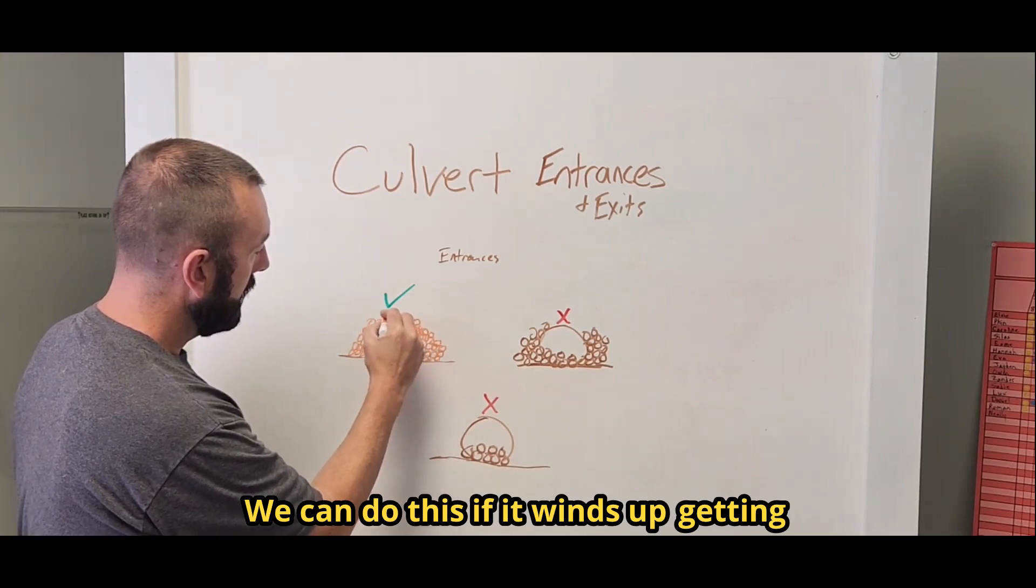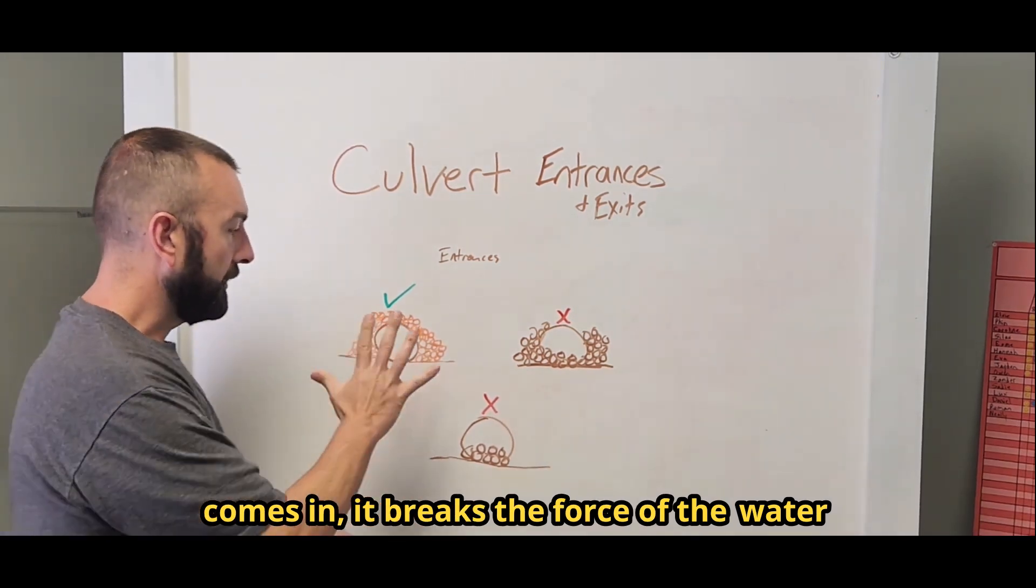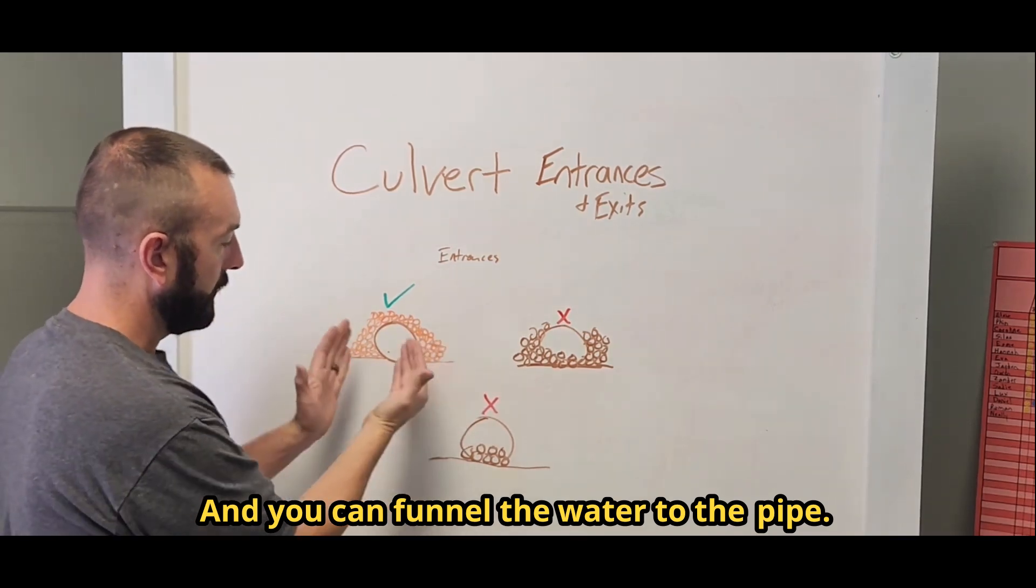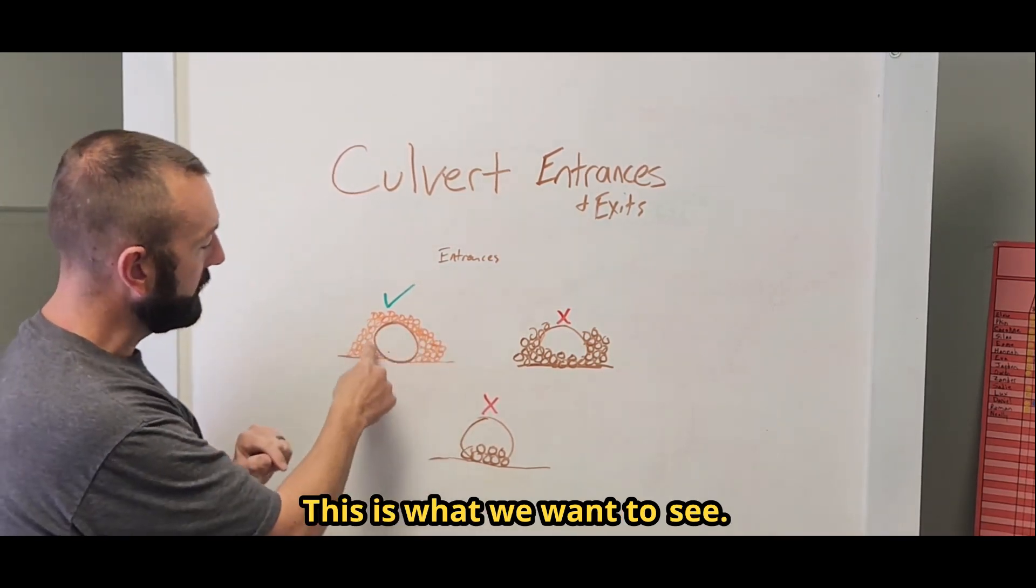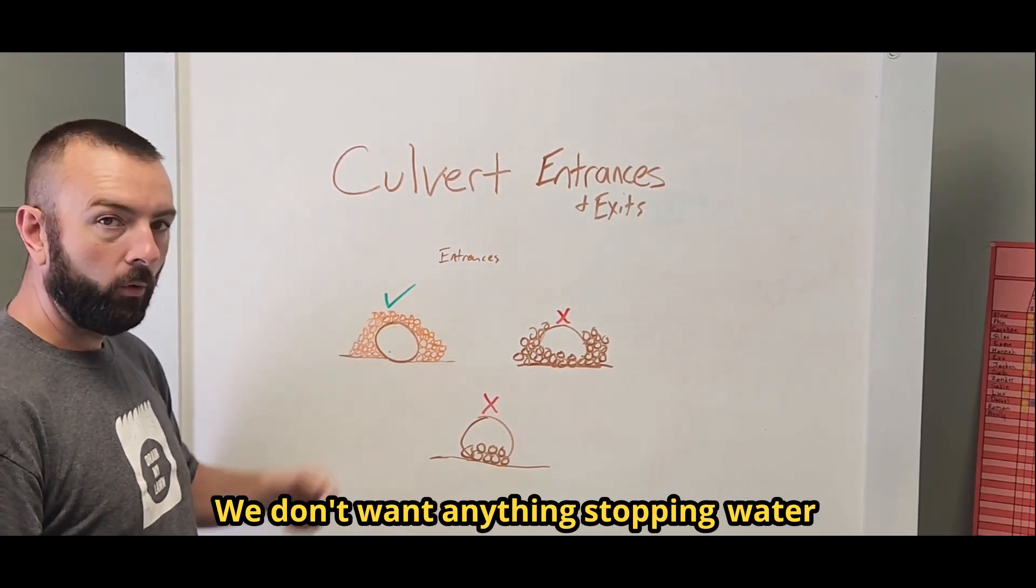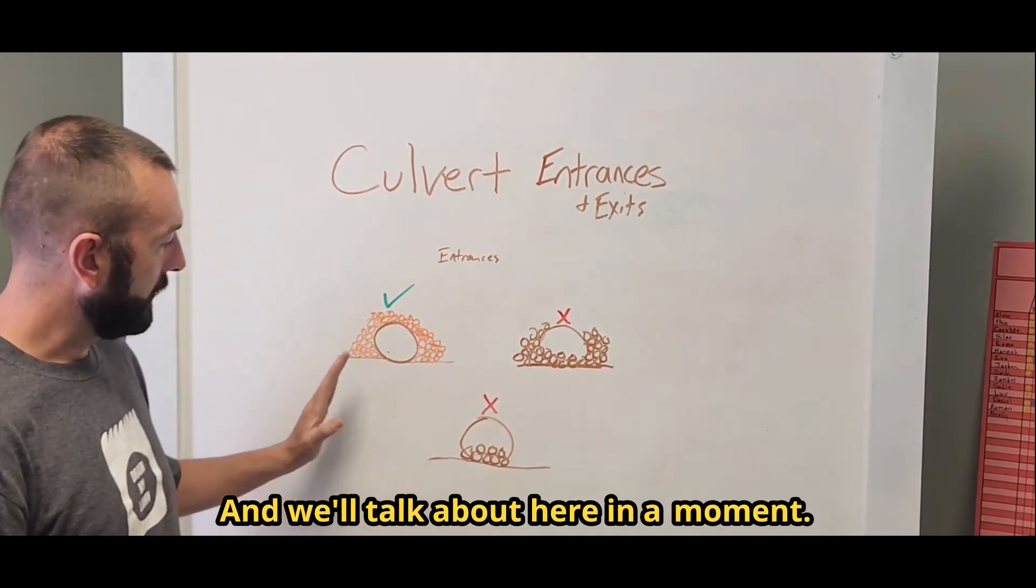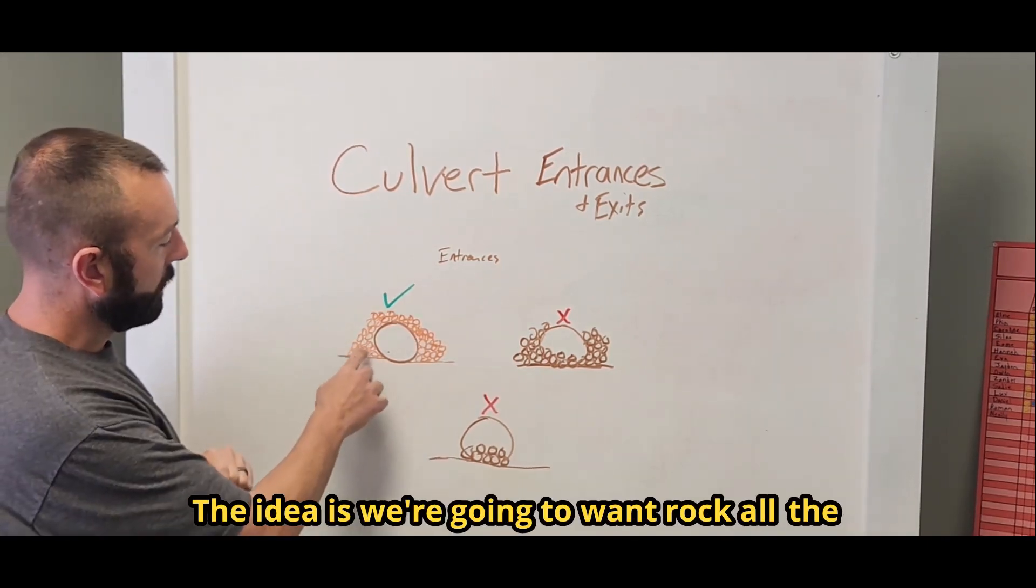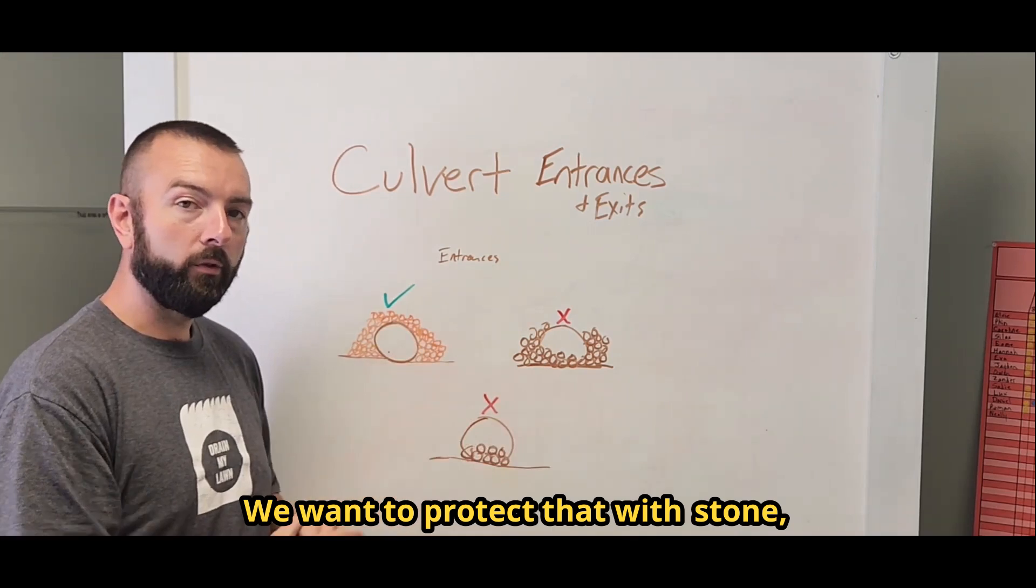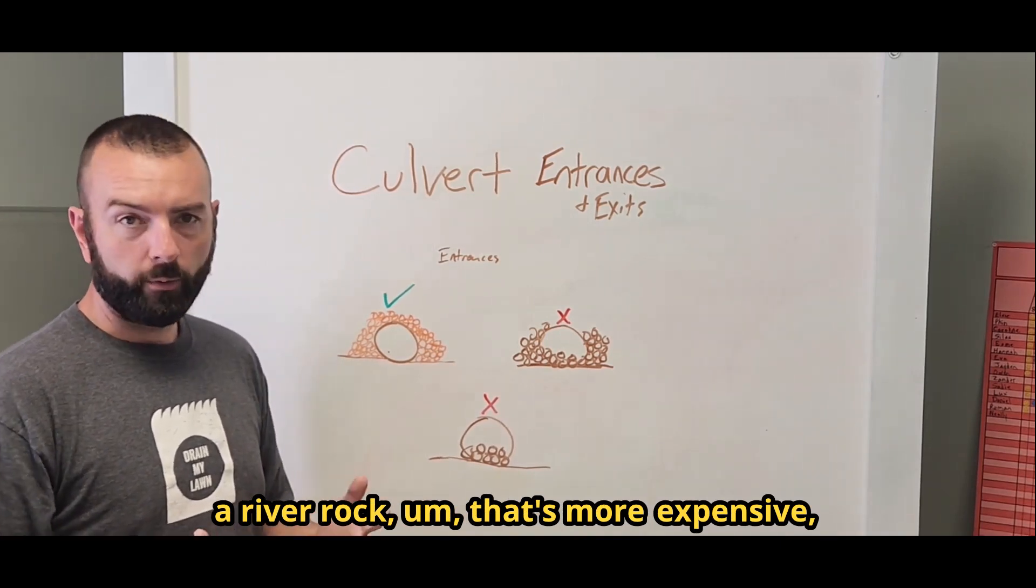We can even do the stone all the way up on top depending on how much we get. The stone, what it does when the water comes in, it breaks the force of the water so it doesn't erode the soil behind it. And it'll force and you can funnel the water to the pipe. This is what we want to see. We want the pipe entrance to be clear. We don't want anything stopping water from entering the pipe. The idea is we're going to want rock all the way around. Wherever the water's going to hit and change direction, we want to protect that with stone. Typically you use riprap. We can use in more decorative situations river rock that's more expensive but looks nicer.